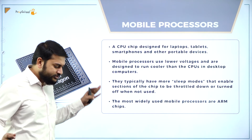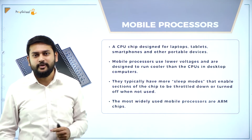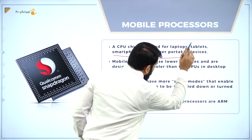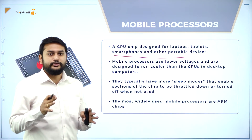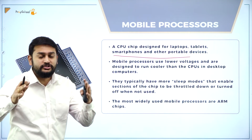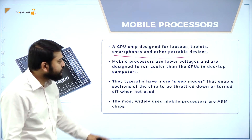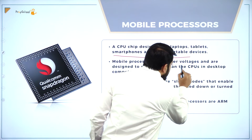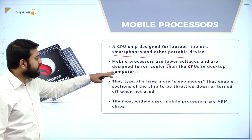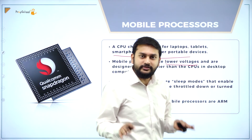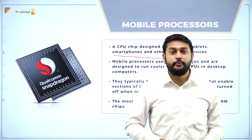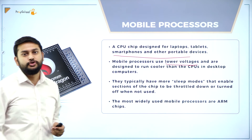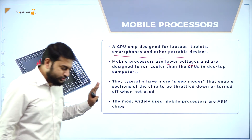Now the mobile processor — a cool last topic. A CPU chip is designed for laptops, tablets, smartphones, and other portable devices. The mobile processor uses low voltage and is designed to run cooler than the CPUs in desktop computers. Mobile phone CPUs consume low voltage power compared to desktops. They also typically have more sleep modes.